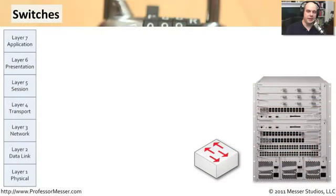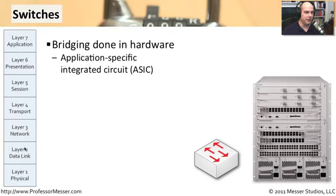Let's start our discussion of these network devices on switches. These switches are really great big bridges. They operate at layer two of the OSI model. I put a representation here of the different layers of the OSI model on the left-hand side. We're really talking about layer two, primarily, in these switches.